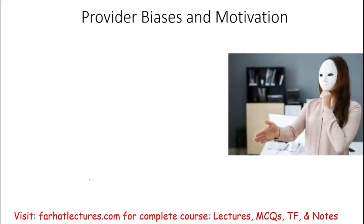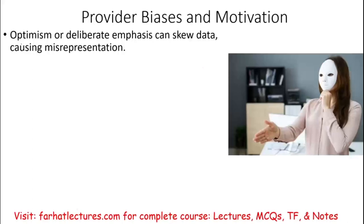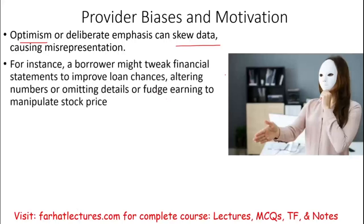Another reason for information risk is provider biases and motivation. Whoever is giving you this information — let's assume you're the bank — well, they have a bias. That bias could be deliberate or simply put, optimism. Or they can skew the data, causing some misrepresentation. For example, a borrower might tweak the financial statements to improve their loan chances, altering numbers or omitting details, fudging earnings to manipulate the stock.